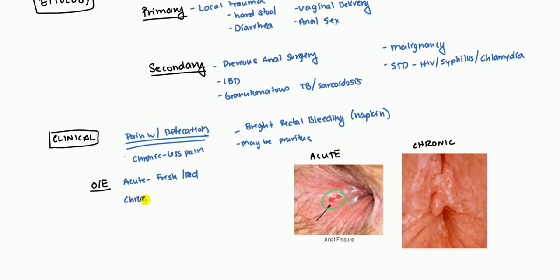A chronic one, on the other hand, will tend to have more raised edges. So that's what you tend to see. And so if you look at this diagram here, all that area right there, that upside down U-shape area, you can see it's raised and hypertrophied. What you also tend to get is skin tags.